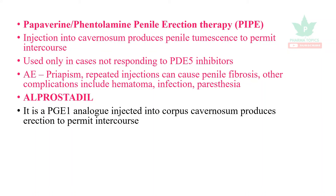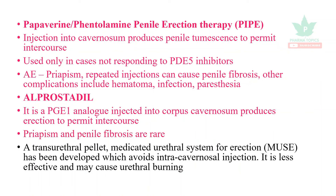With alprostadil injection, priapism and penile fibrosis are rare. A transurethral pellet system called MUSE — Medicated Urethral System for Erection — has been developed, which avoids intra-cavernous injection. It is less effective but may cause urethral burning. This covers all the drugs used in the treatment of erectile dysfunction.